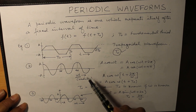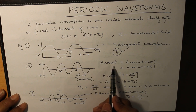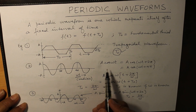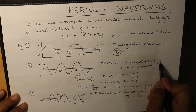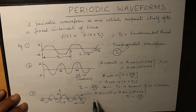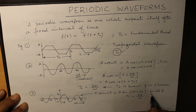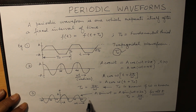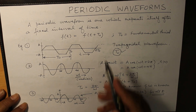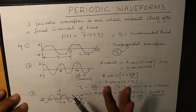Now, what is the difference between this cosine wave and this sine wave? This cosine wave is basically meant only for t greater than 0, whereas A sin(ωt) is for all t. When it is for all t, periodic waveforms can be classified into three categories.